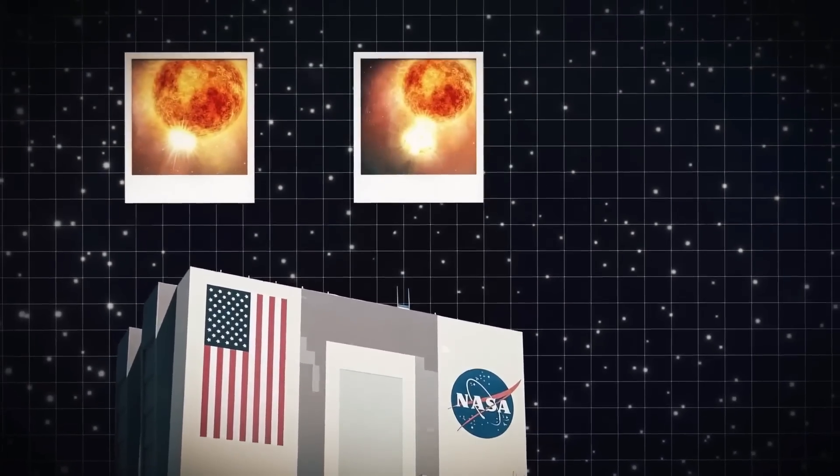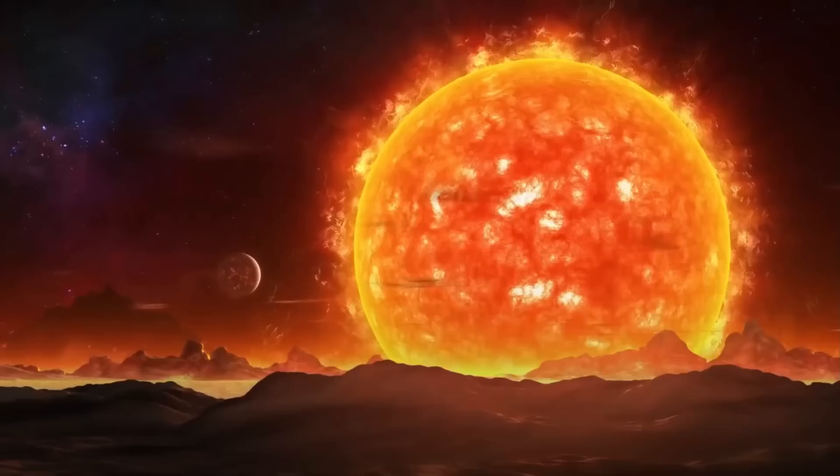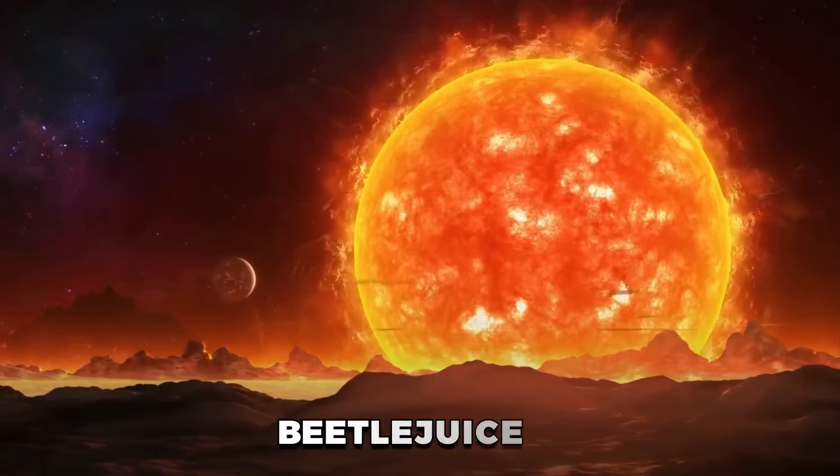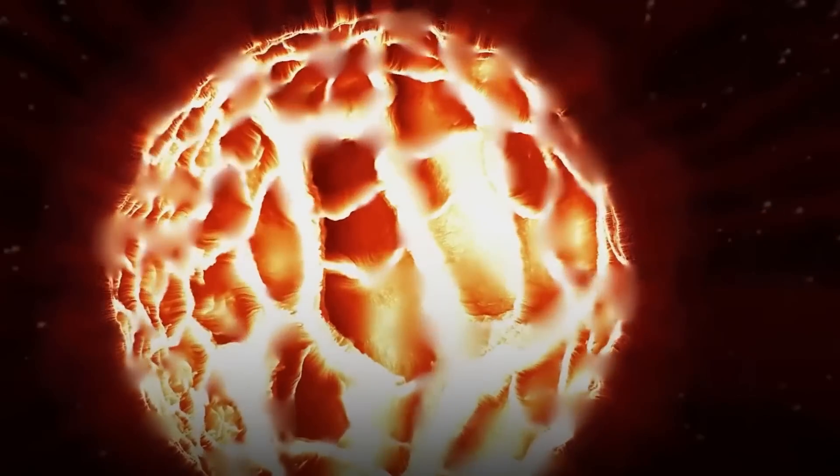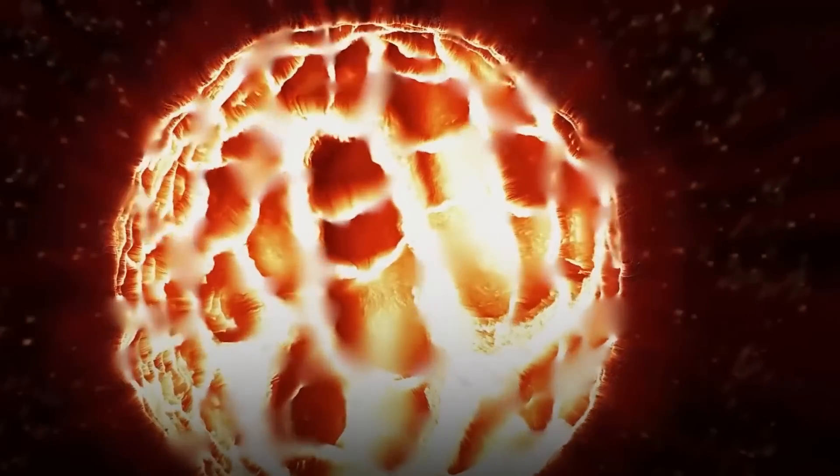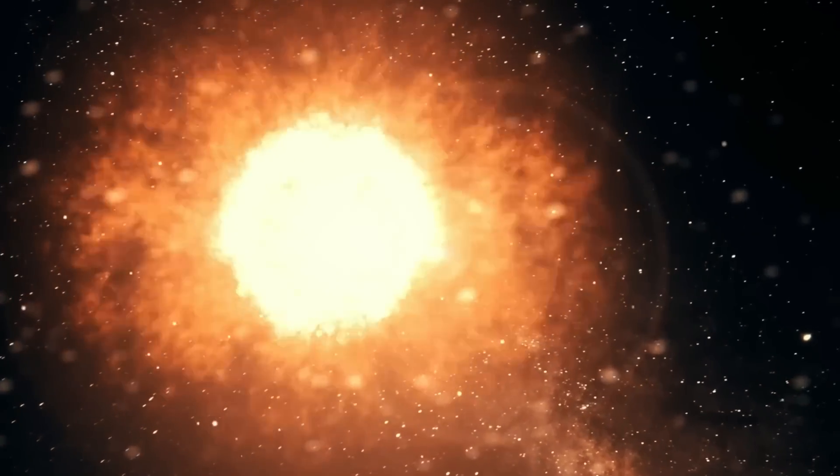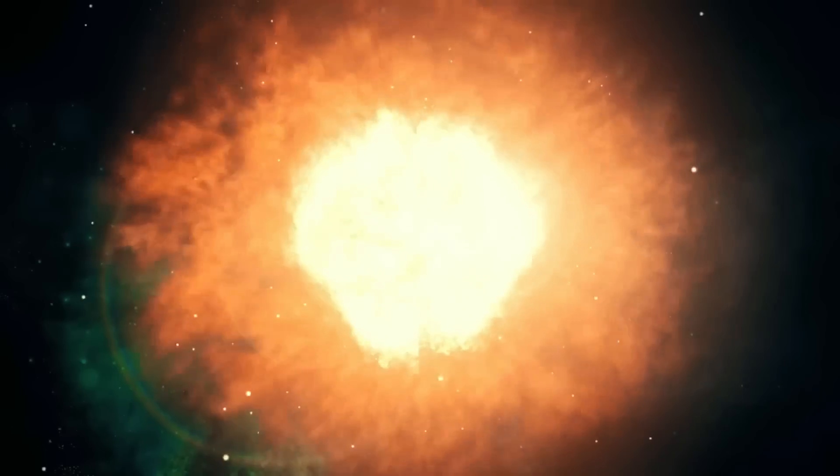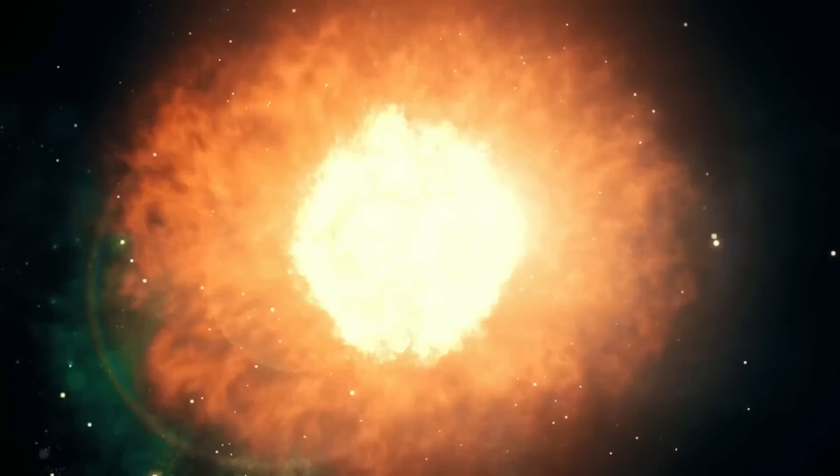NASA has shared pictures of something that has never been seen before. A star called Betelgeuse blew off its top and threw off a huge chunk of its surface mass. The space agency says the ejection was 400 billion times the mass of a normal solar flare from our Sun.